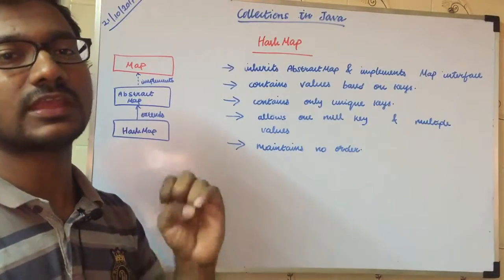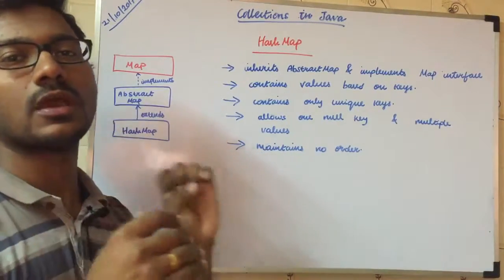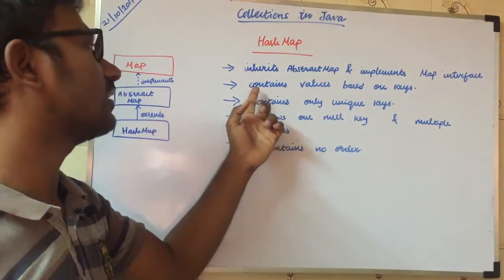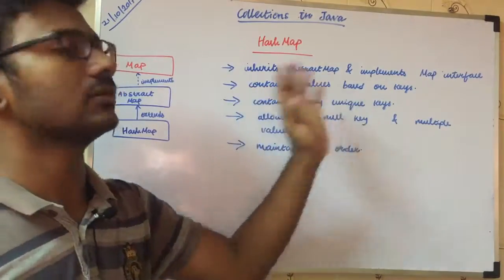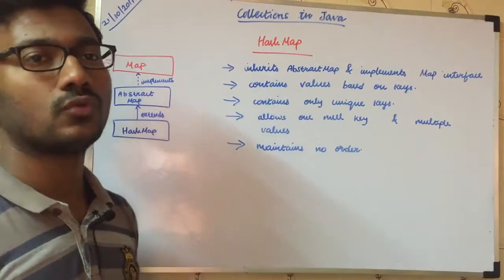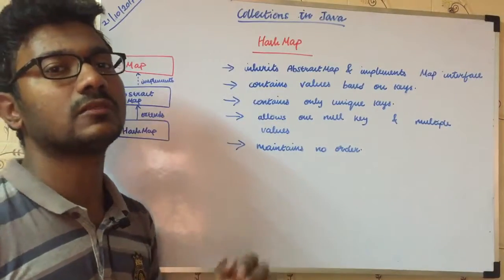Map properties contains pair values, key and value. And key is unique. So, next point contains values based on keys. This is a map property. It contains only unique keys. So, repetition and duplication keys are added.